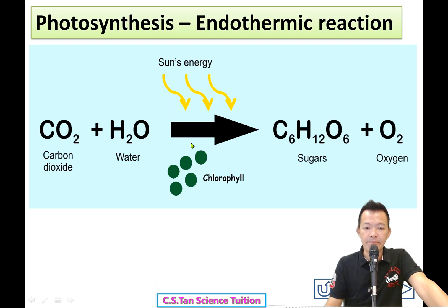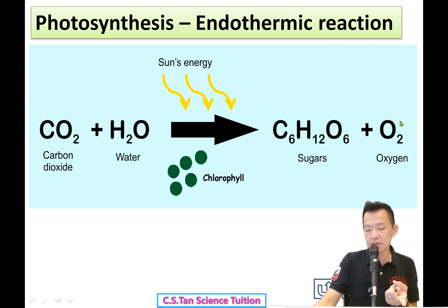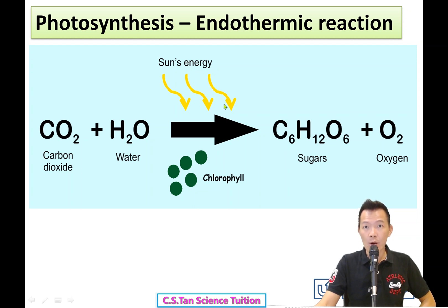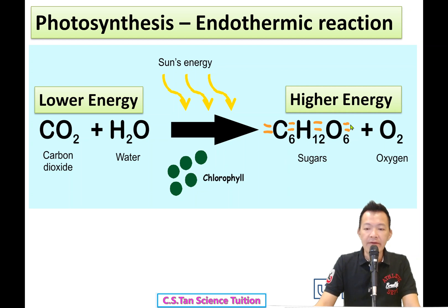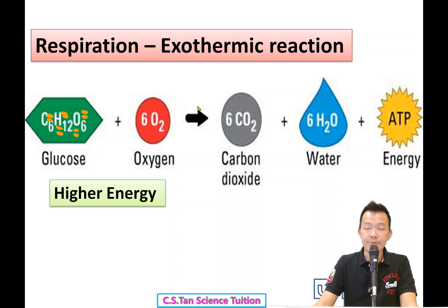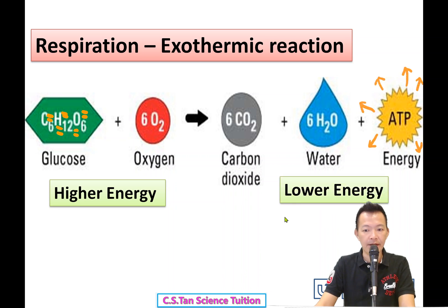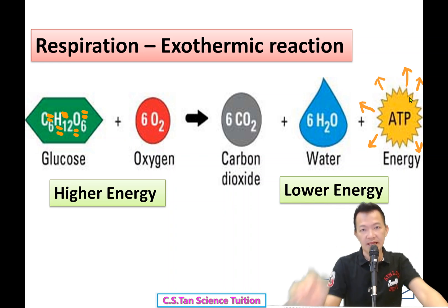So photosynthesis is an endothermic reaction — carbon dioxide and water compared to sugar and oxygen have less energy. Respiration is exothermic — energy goes back to the environment. 那个能量被我们放出来了. 这边就是我们所谓的 exo: 化学反应过后, 你的反应体的能量变成新的 product, 没有能量的 product, but the energy finally goes back to the environment. 那股能量回去了大自然.